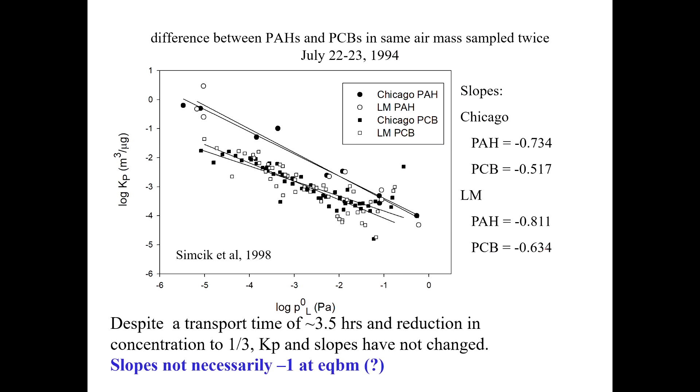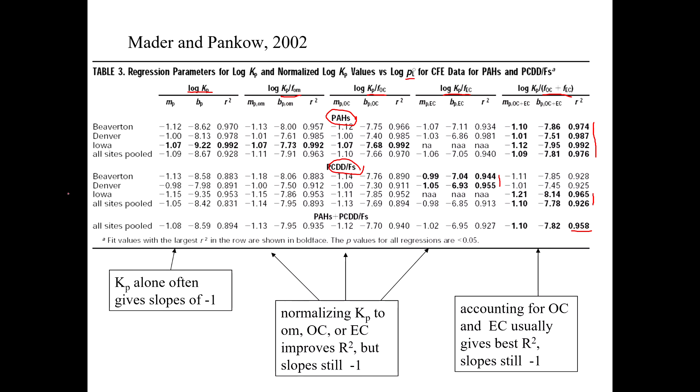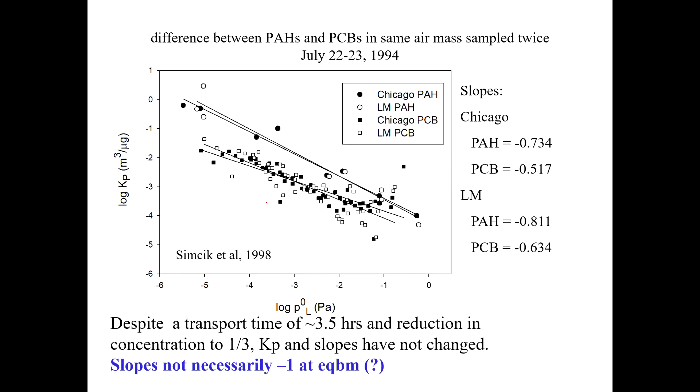We just had that conversation about how these slopes should be minus 1. And by the way, look at here. Minus 1, minus 1, minus 1, all very, very close to minus 1. So at equilibrium. But then there's an experiment. This is a little bit older. There's Matt Simczyk, his PhD dissertation, where they were taking samples in the city of Chicago, those are the dark symbols, and then also out over Lake Michigan. Even though it takes the air three and a half hours roughly of travel time to go from Chicago out to their site in Lake Michigan, and the concentration dropped by a third, Kp and the slopes didn't change, and notice that the slopes are not 1. But if they're not changing, then you must be at equilibrium. So they're making the argument that it is possible to be at equilibrium even when the slopes are not minus 1.